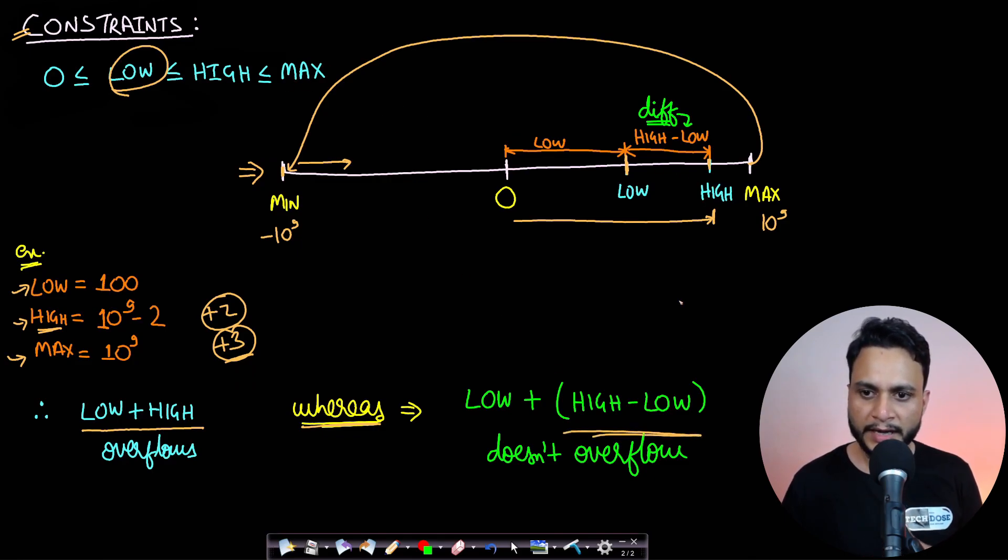High minus low is this diff value on the number line. If you add low to high minus low, you can visually see it is never going to overflow, provided low and high will always be less than or equal to max.